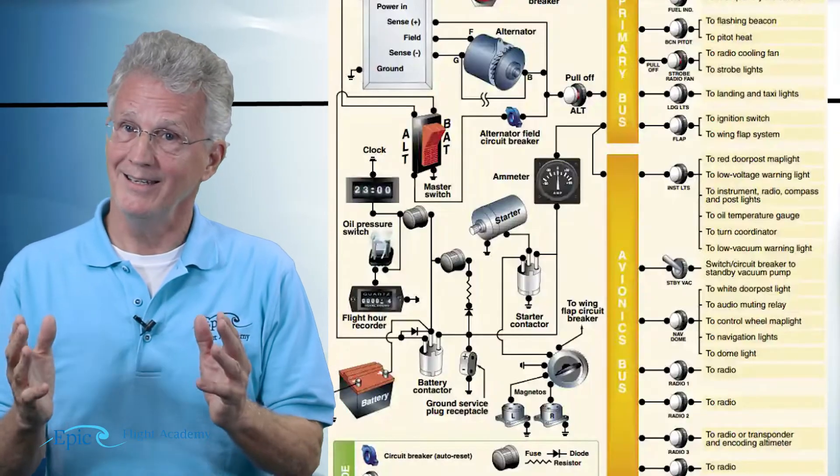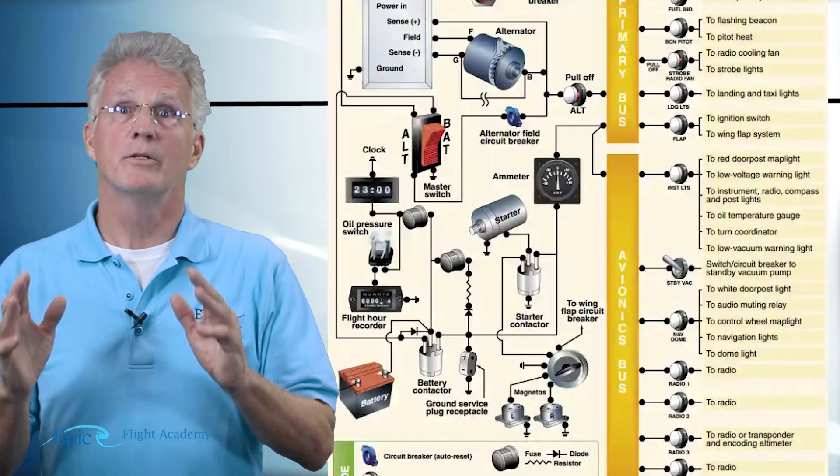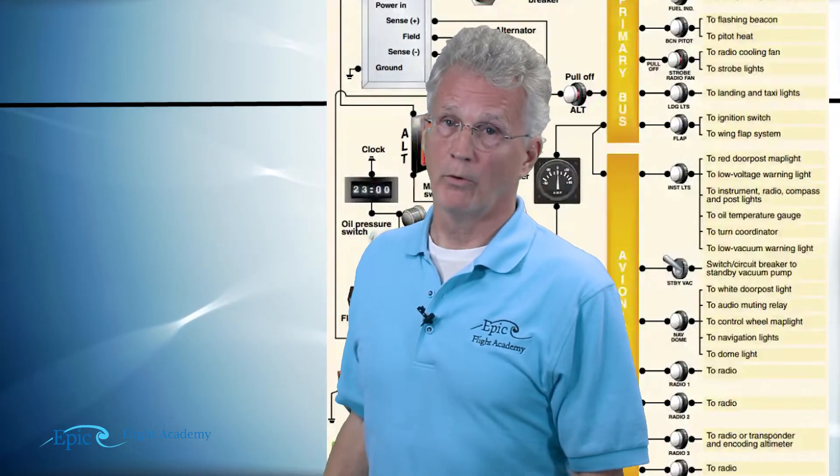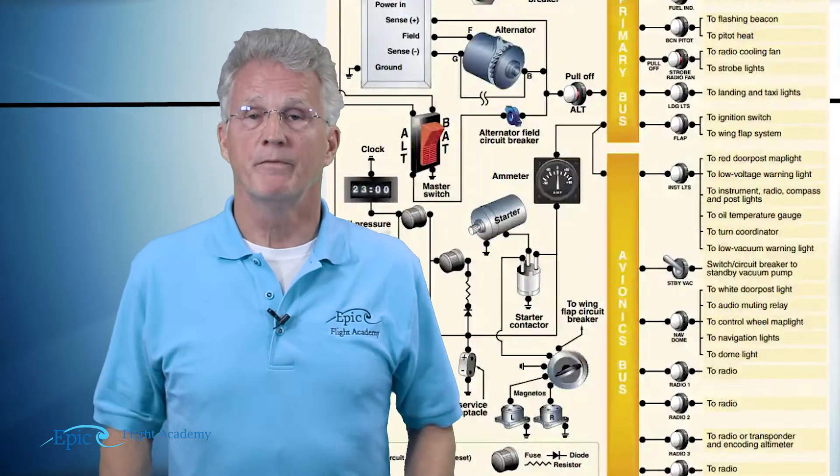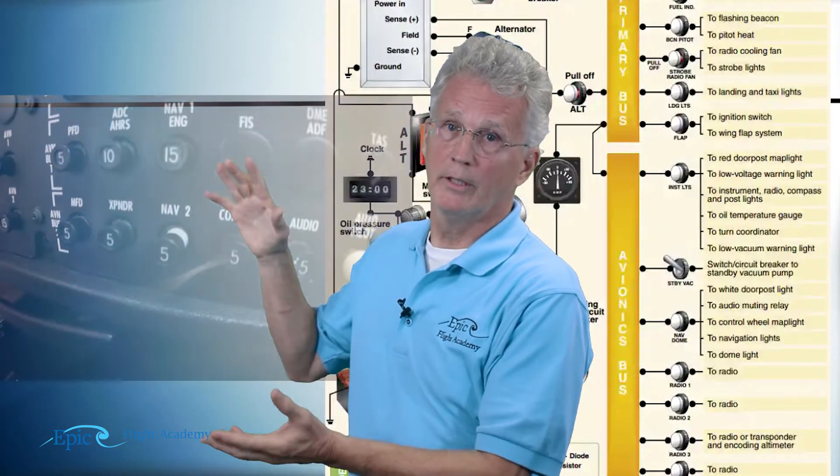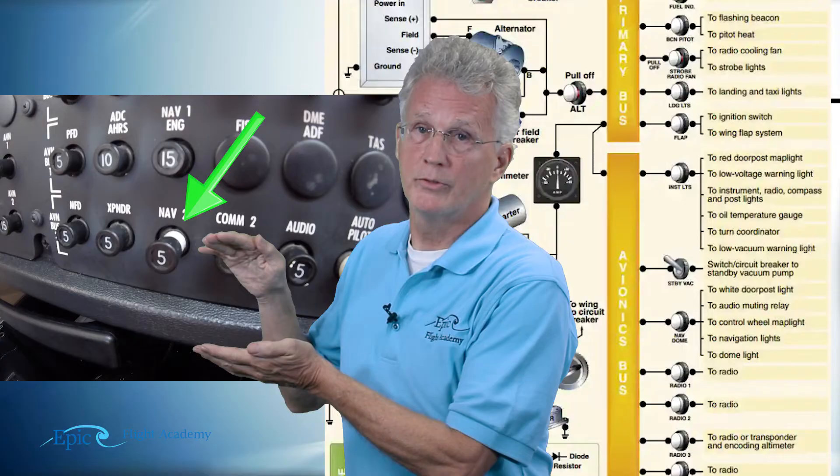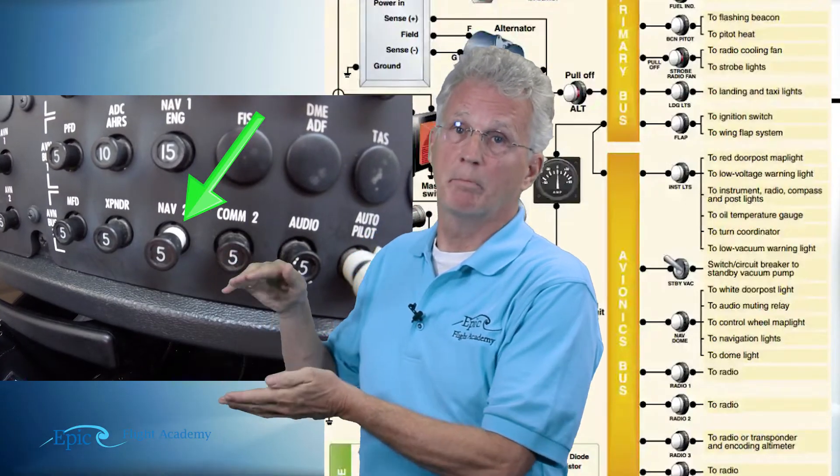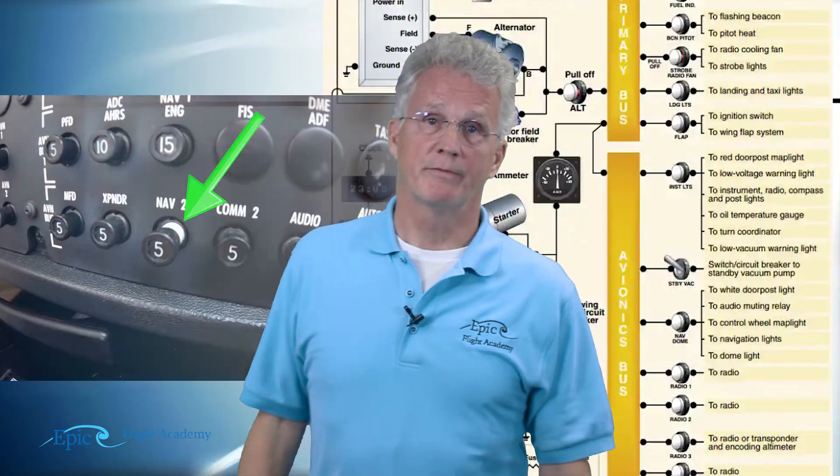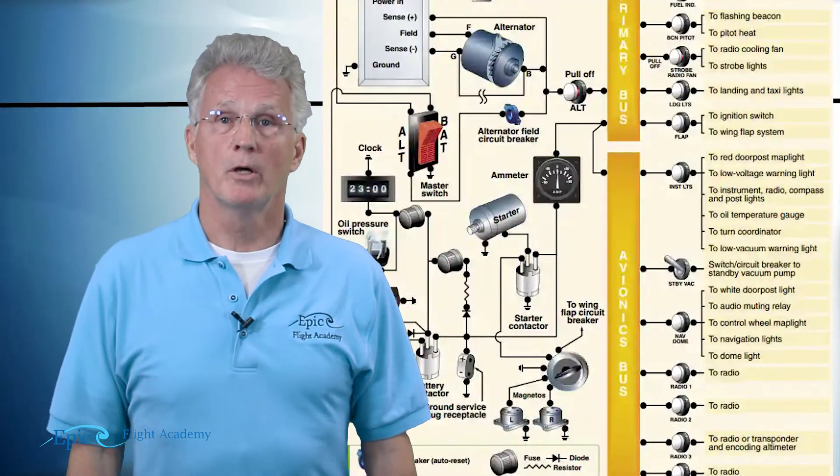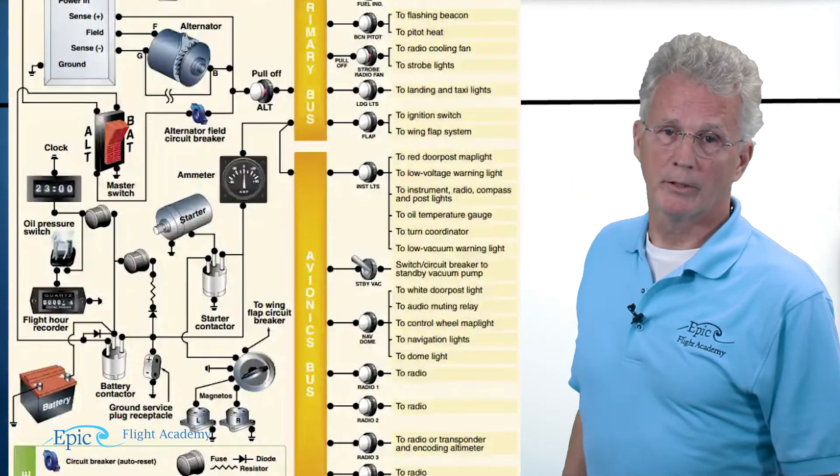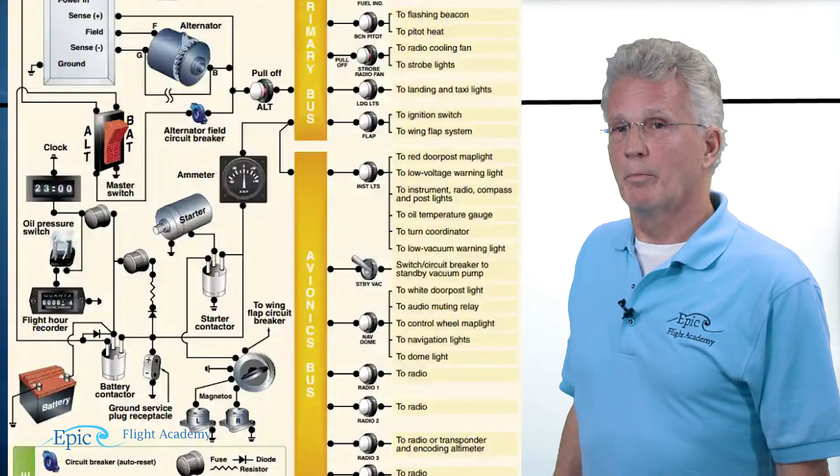A short circuit is going to have a high amperage flow. A high amperage flow is going to generate a lot of heat. A lot of heat in an airplane could be unsafe - that could result in a fire. That's something we want to avoid, and that's why we have circuit breakers. If that amperage gets too high, it senses the heat, pops, literally opens, or we say breaks the circuit, stops the amperage flow. That's a safety concern.